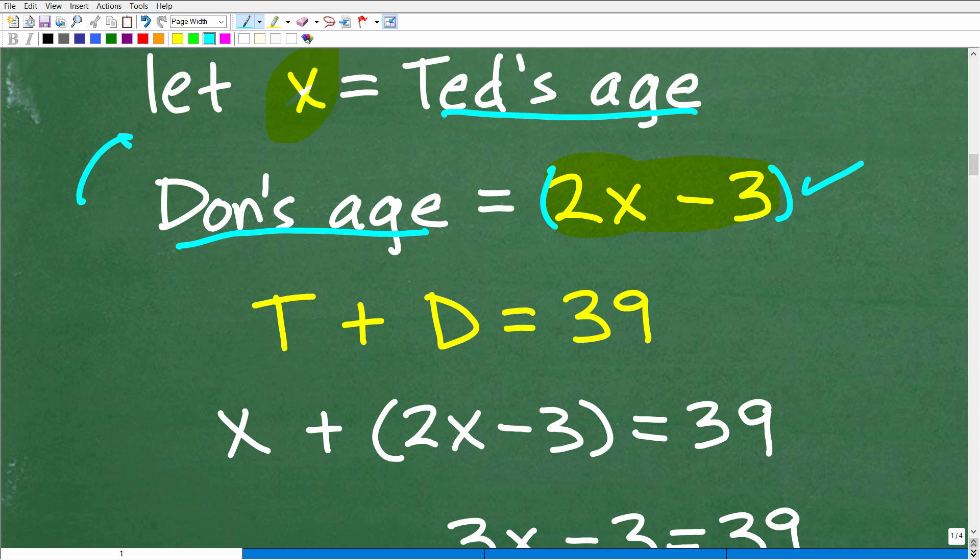Because if I get X, I will have solved for Ted's age. And then here, to get Don's age, all I have to do is whatever X is equal to, just multiply by 2, subtract 3 away from it, and I'll be good to go. So we're going to use this fact, that Ted's age and Don's age is 39. But in this case, instead of T plus D, we know that Ted's age is going to be X, right? It's the same thing as X, plus Don's age is what? 2X minus 3, and the sum of their ages is 39. So now I have myself a lovely algebraic equation.